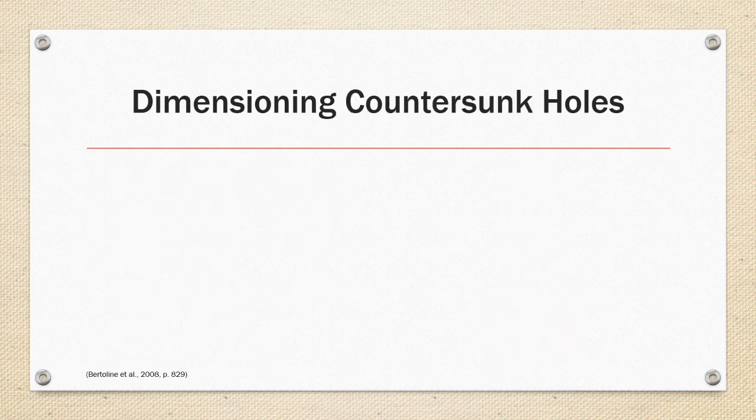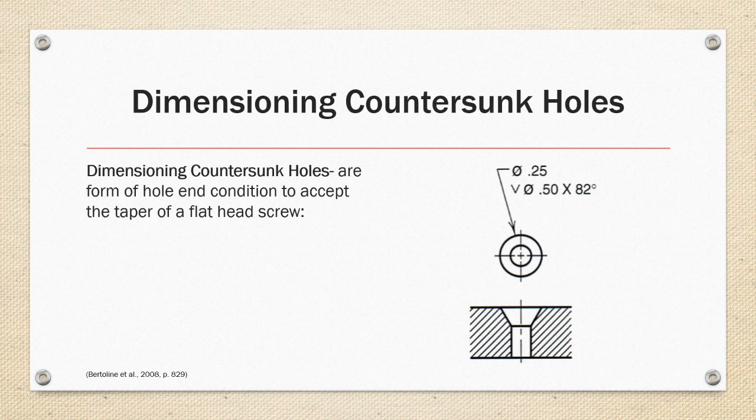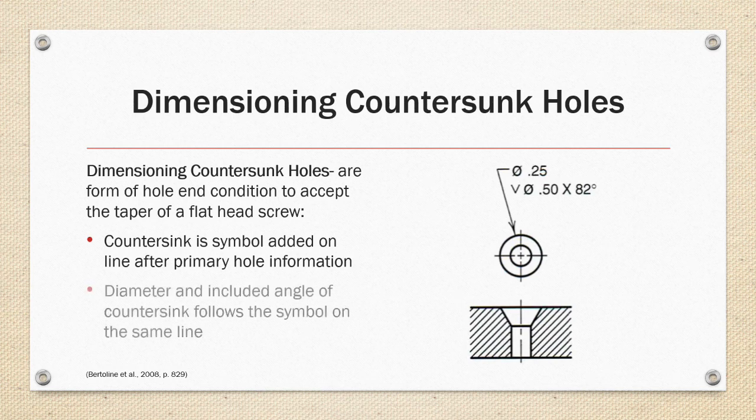Dimensioning Counter-Sunk Holes. Counter-Sinks are a form of hole end condition to accept the taper of a flathead fastener such as a flush rivet or flathead screw. The counter-sink is a symbol added on the line after the primary hole information and both the counter-sink diameter and the included angle follows on the same line. So in this example, we have a 0.25 diameter through hole with a counter-sink that's 0.5 in diameter with an 82 degree included angle.